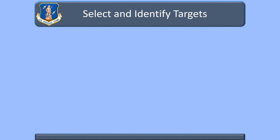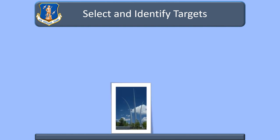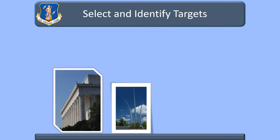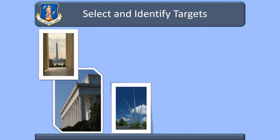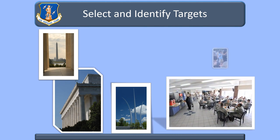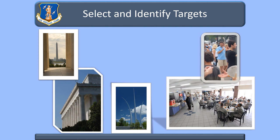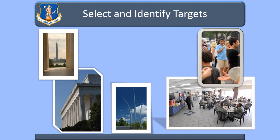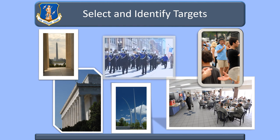Now that we have talked about threat factors, let's discuss how terrorists select their victims and identify their targets. You might happen to be in a location targeted by terrorists. Terrorists may look specifically for Americans, or terrorists look for random easy targets of opportunity. Terrorists can identify targets from residential or public gathering areas, use personally identifiable information, or use the appearance of importance to select targets.